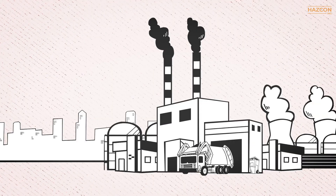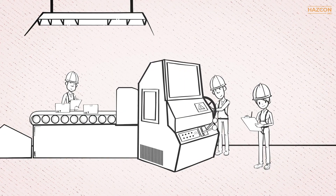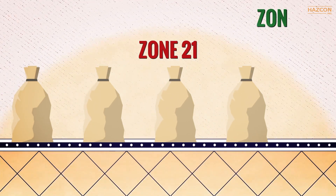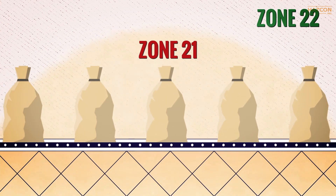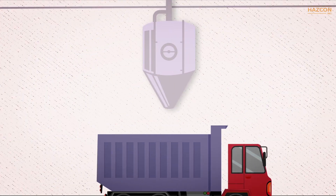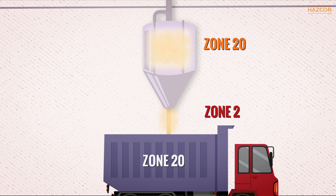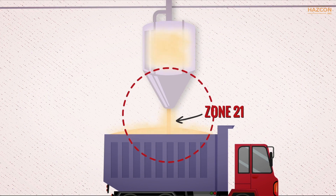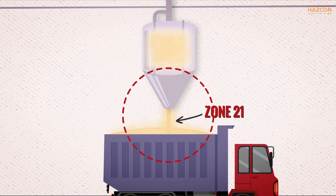Typically, mills, warehouses for coal or grain, and the area surrounding filling stations are all classified as Zone 21. Looking at a diagram that shows all three zones — Zone 20, 21, and 22 — Zone 21 is the area where explosive clouds of dust can develop due to the occasional escaping of dust from the opening or dust filling stations.